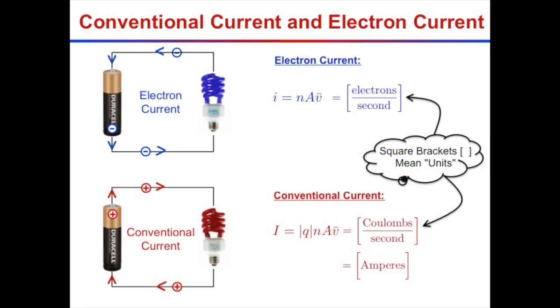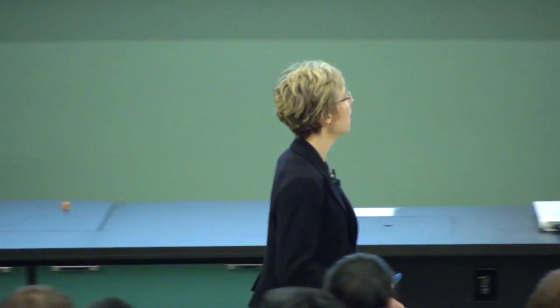The mathematicians in the room may be uncomfortable, because I've used little i — which here means electrons per second — but mathematicians like to use it for the square root of minus one. Apologies; there just aren't enough symbols in the world, so sometimes a symbol has to do double duty.